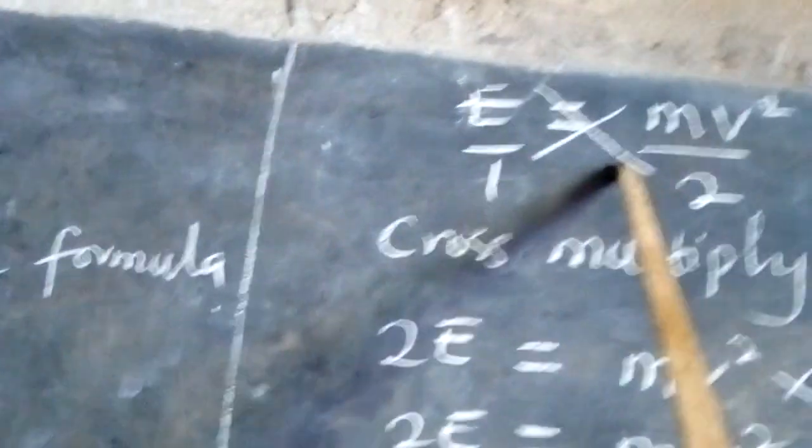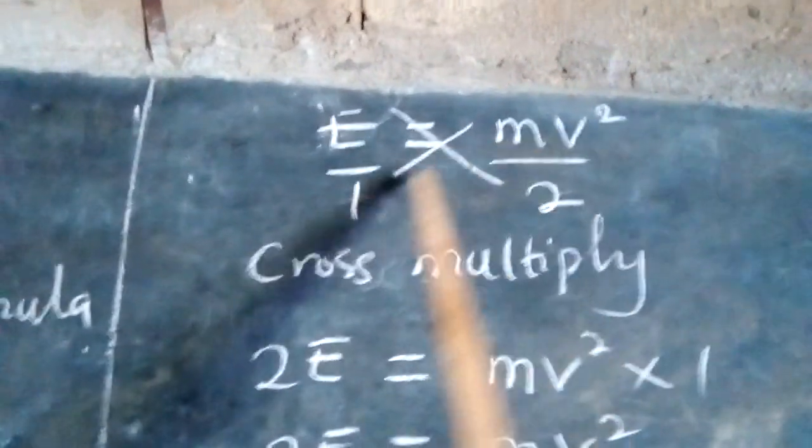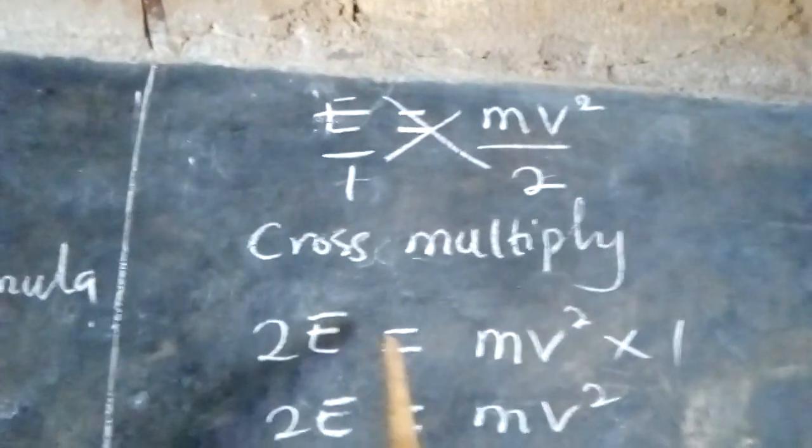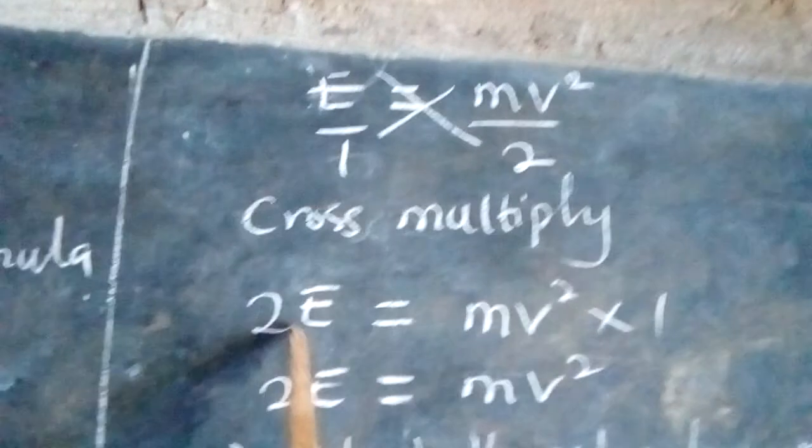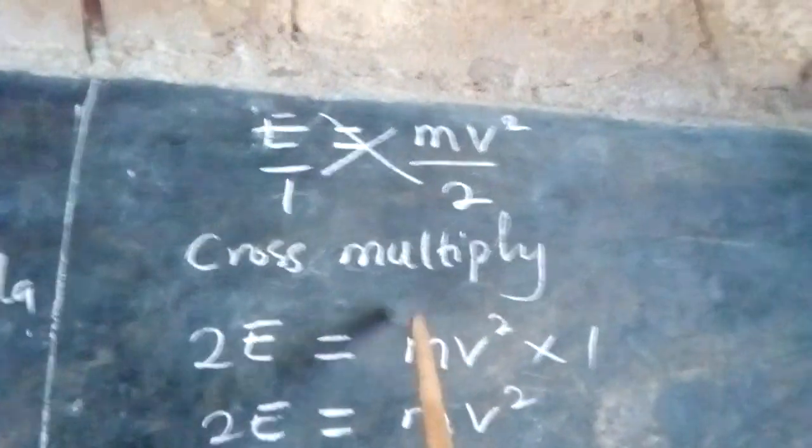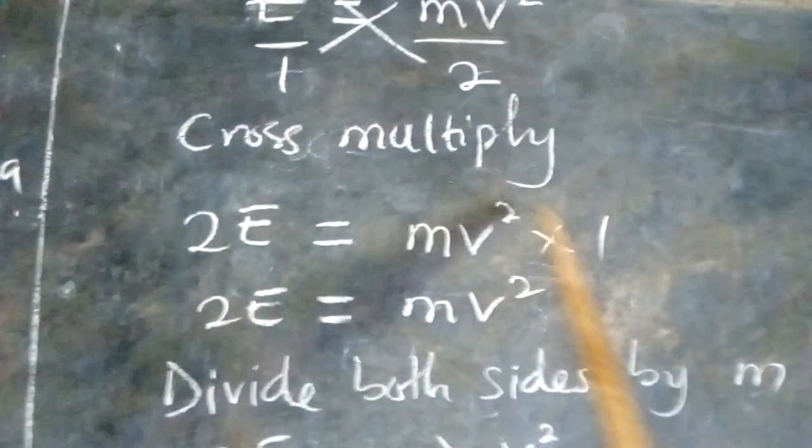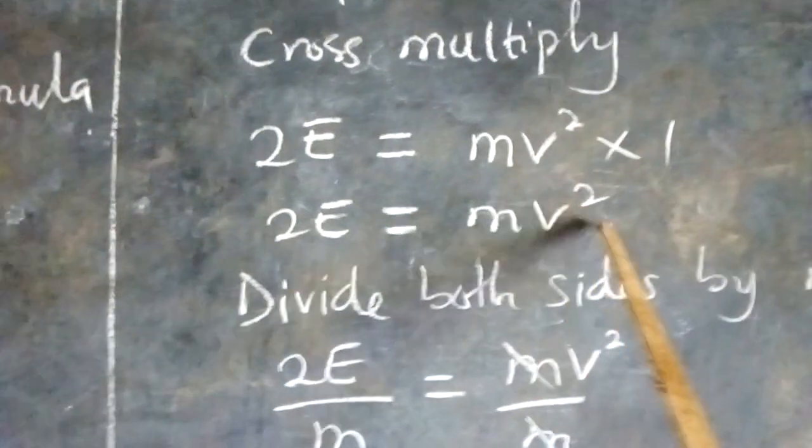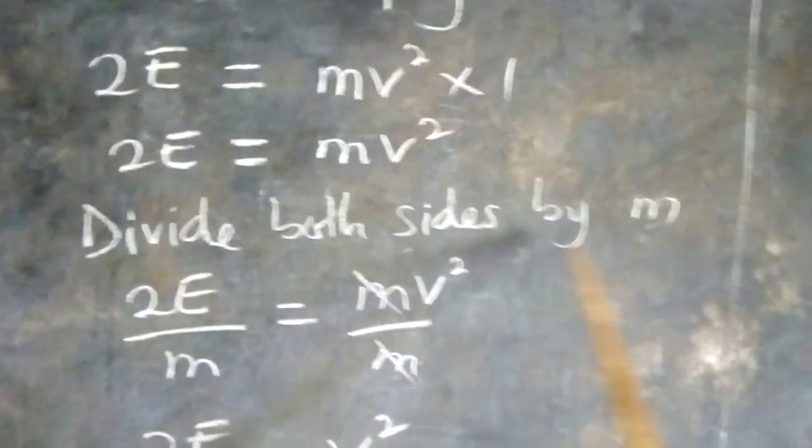After this, we cross multiply. This multiplies this, this multiplies this. That is cross multiplication. So, when they multiply one another like that, you have 2E and you have mv squared times 1. So, mv squared times 1 is still mv squared. That is why we have 2E equals mv squared. So, the next step here is to divide both sides by m.